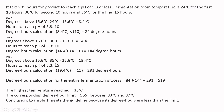Step 3 — 35°C for 15 hours: 35 − 15.6 = 19.4; 19.4 × 15 = 291 degree hours. Summing all steps: 84 + 144 + 291 = 519 degree hours. The highest temperature reached was 35°C, so the corresponding degree hour limit is 555. Since 519 is less than 555, this product is okay — we can release it.